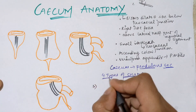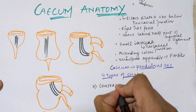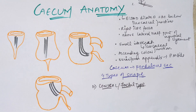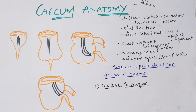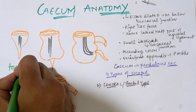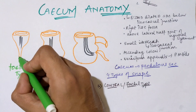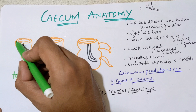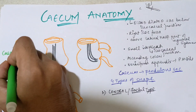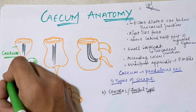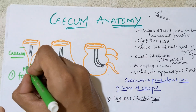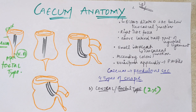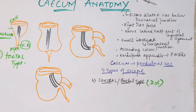The first shape is the conical or fetal type. In this shape, the vermiform appendix is present at the apex of the cone, with the base at the top. This is not commonly seen and occurs in only about 2% of people.